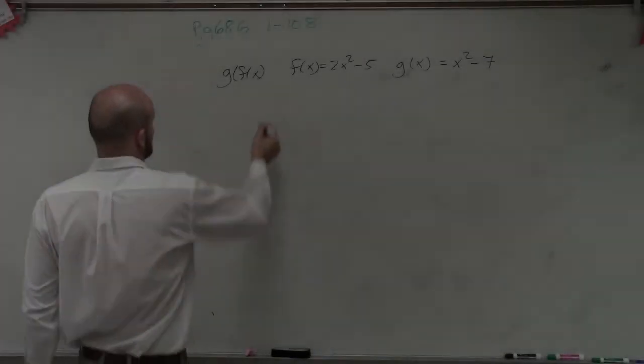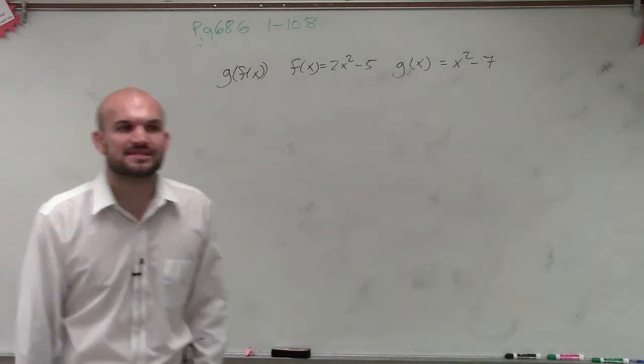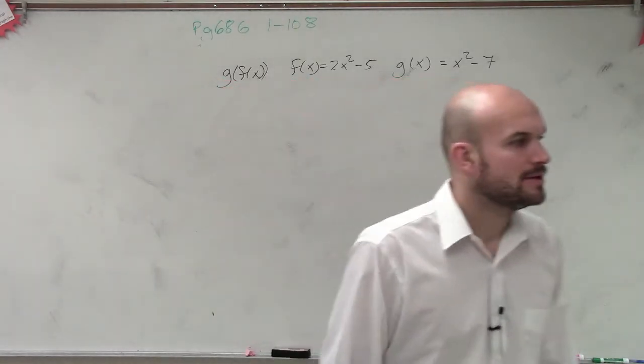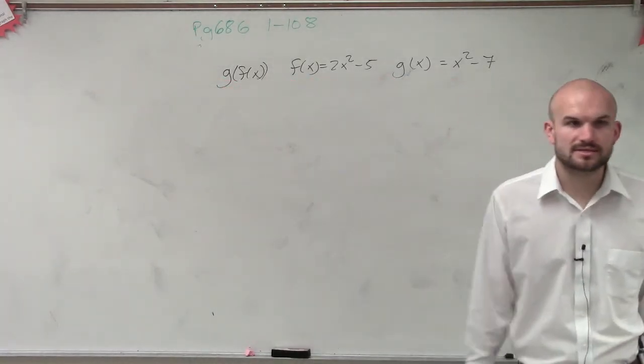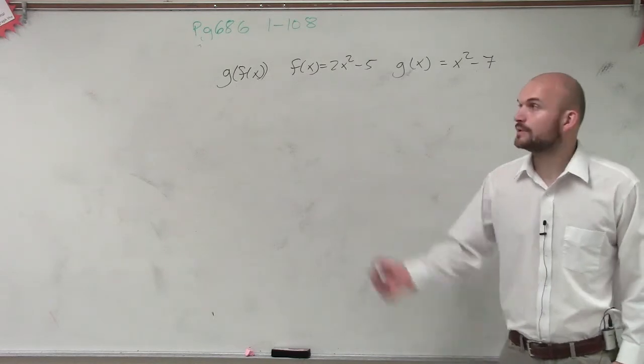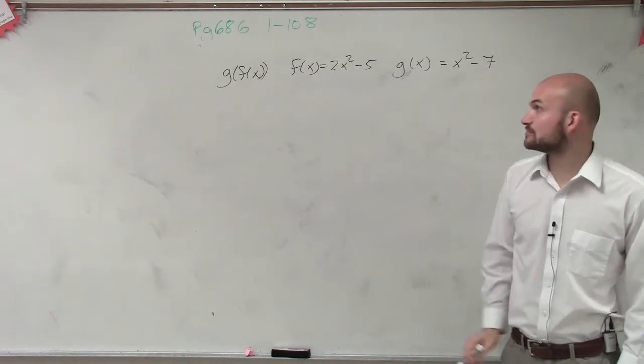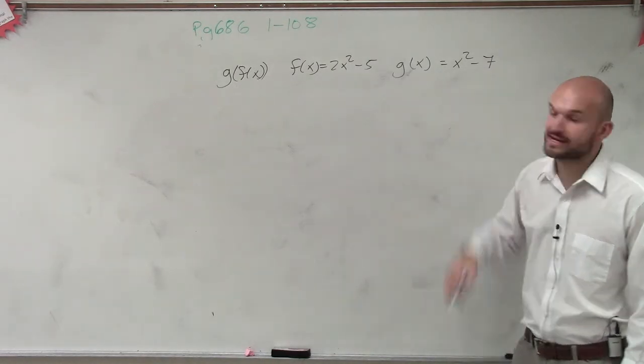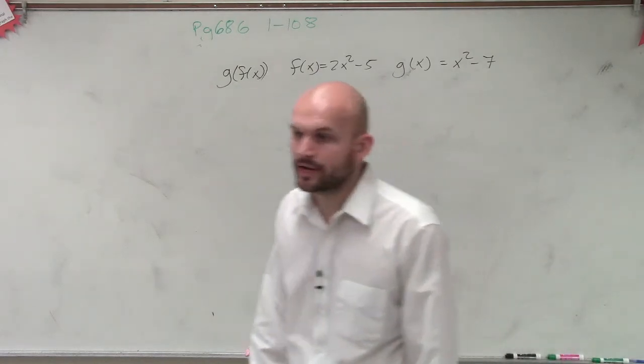So what they're asking us in this one, ladies and gentlemen, is to apply the composition of two functions. So when applying this type of problem, what we're simply going to do is you're going to have f of x equals 2x squared minus 5 and g of x equals x squared minus 7.